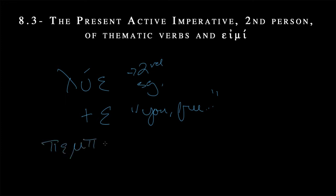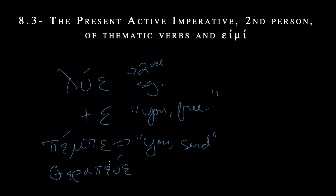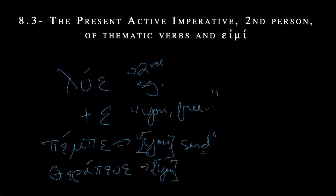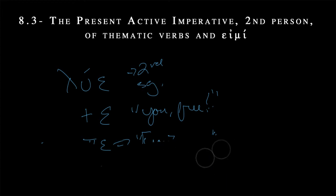Let's try others. 'Send' — so normally that would be pempo, but we just make it pempe. So this is, again, you singular, send. 'Train' — therapeue. Actually, I need to change that accent because these are still recessive accents. So therapeue. This is a little bit different than what we're used to in the present indicative because all monosyllabic verb endings that we had in the indicative were long. Here we have a short one that can send the accent back. So therapeue, pempe. All these 'you's can be implied. We normally don't say that in English — just 'hey, send me the postcard sometime.' This was the second person singular present active imperative.